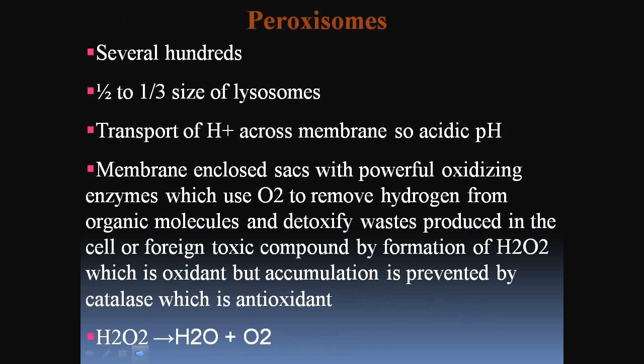The next organelle is peroxisomes. These are observed several hundreds in our cell, and are one-third to two-thirds the size of lysosomes. They are involved in transport of hydrogen ions across the membrane, making them acidic in pH — this is a major characteristic of peroxisomes.